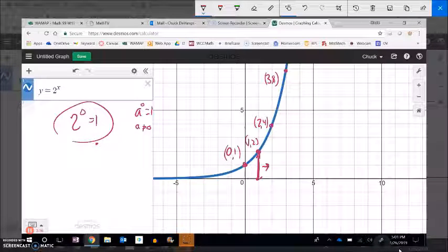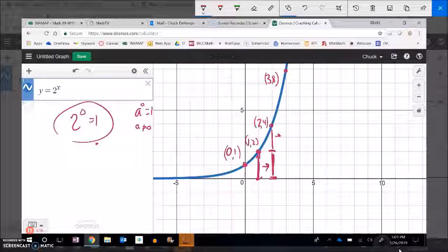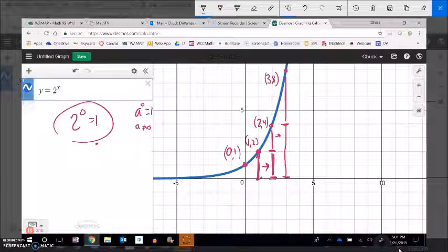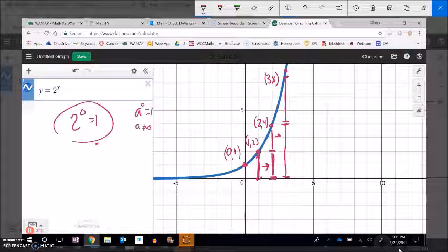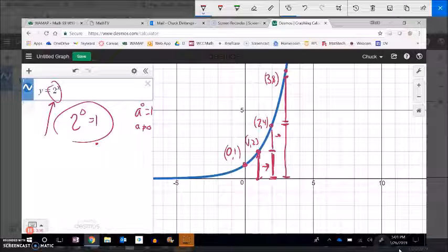This is the point 3, 8. So this height right here is 2. And notice if we go over 1, that height gets doubled. Right? Like times 2. And if we go over 1 again, that height gets doubled. So this base, this 2, tells us something about how it's growing. It's doubling each time.